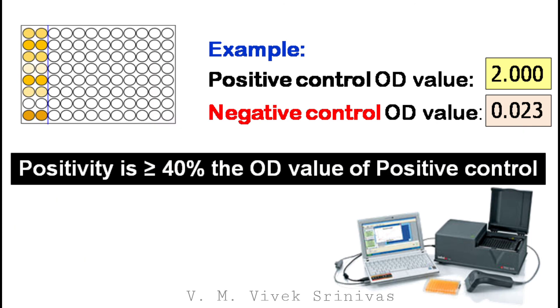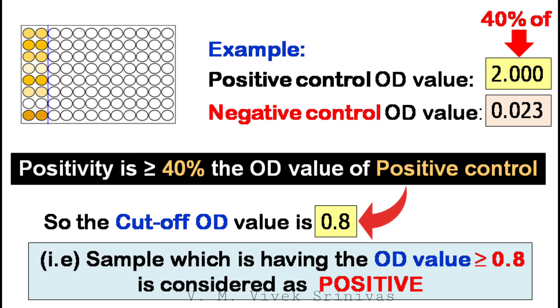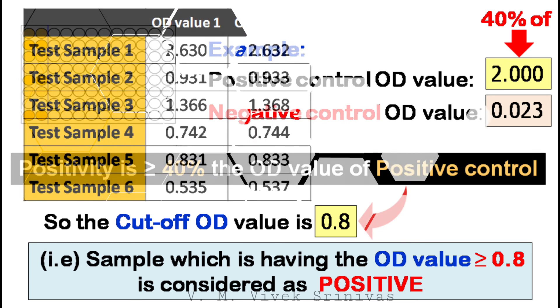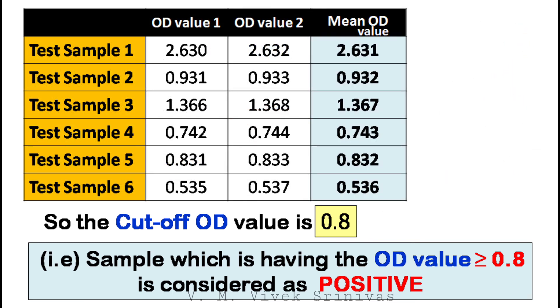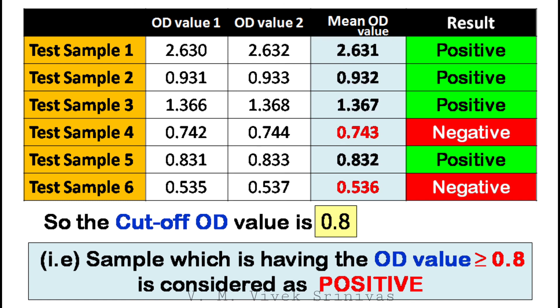The positivity is defined as more than or equal to 40% of the OD value of the positive control. That is, here the positive control OD value is 2.000, so 40% of 2.000 is 0.8. So the cutoff OD value is 0.8. Which means samples having an OD value more than or equal to 0.8 are considered positive. If this is the mean OD value obtained for six samples, then based on the cutoff value, samples 1, 2, 3, and 5, which have OD values more than 0.8, are considered positive. But samples 4 and 6, which have OD values less than 0.8, are considered negative by ELISA. So the control is very important for this experiment and for the interpretation of results.